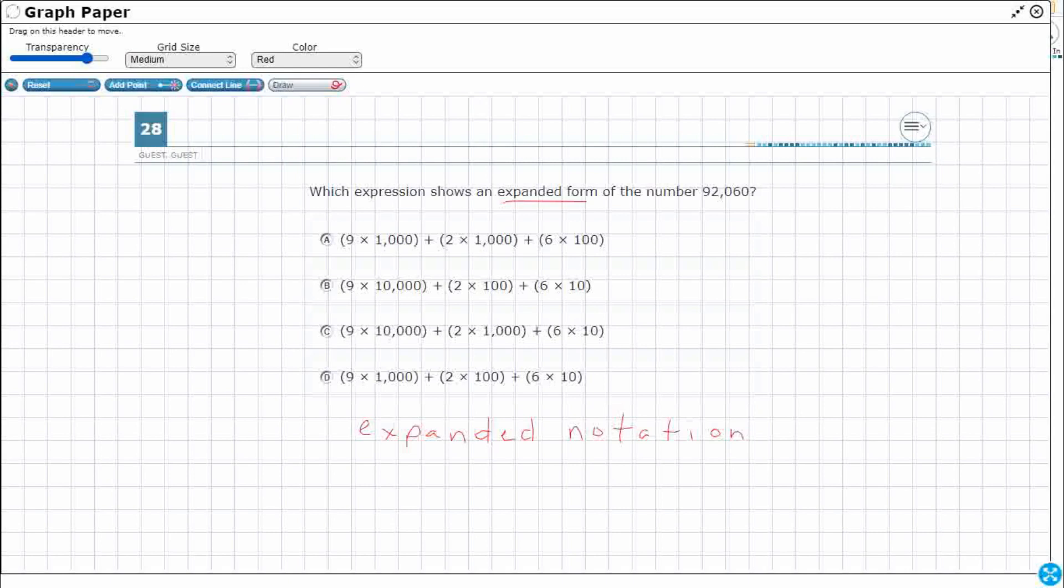So let's take a look at our 92,060. So let's spread it out a little bit, 92,060. And let's put some values here. So there's our comma. So I've got my ones place right here, I've got my tens place right here, and I've got my hundreds place right here.